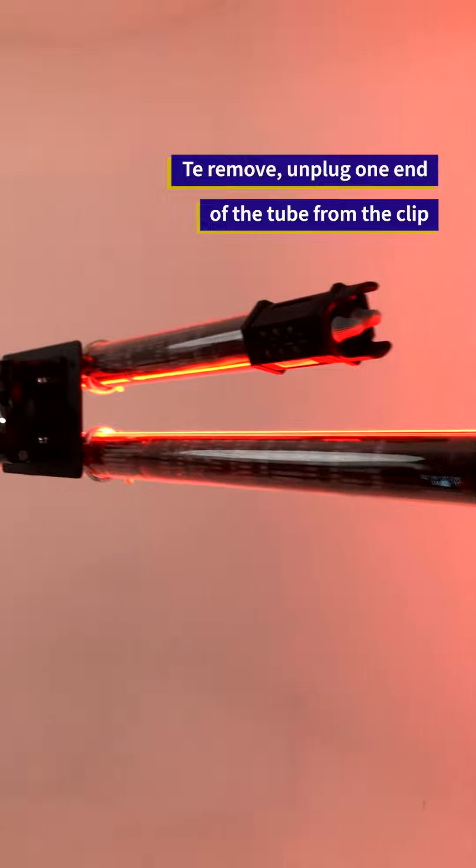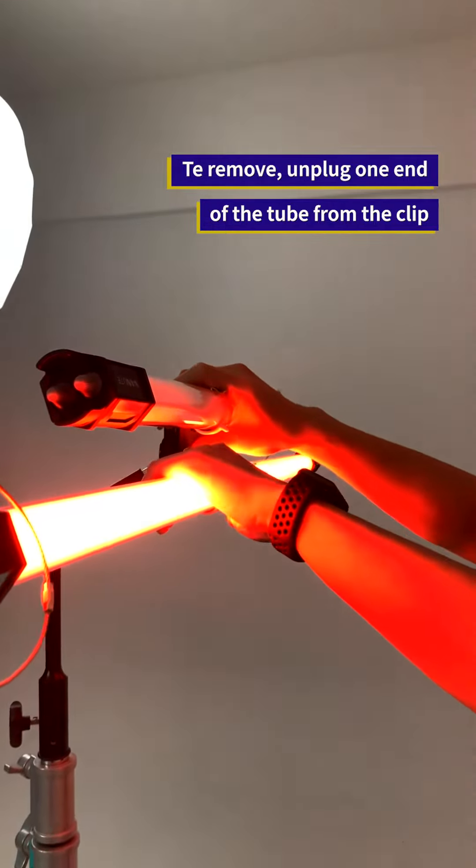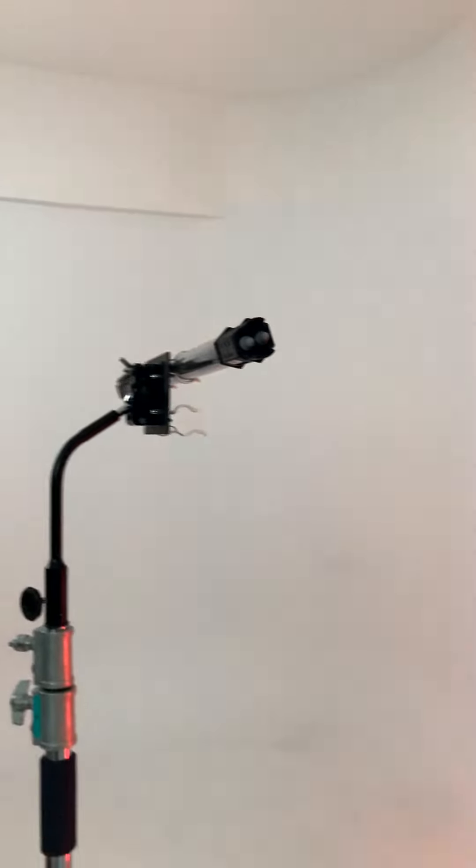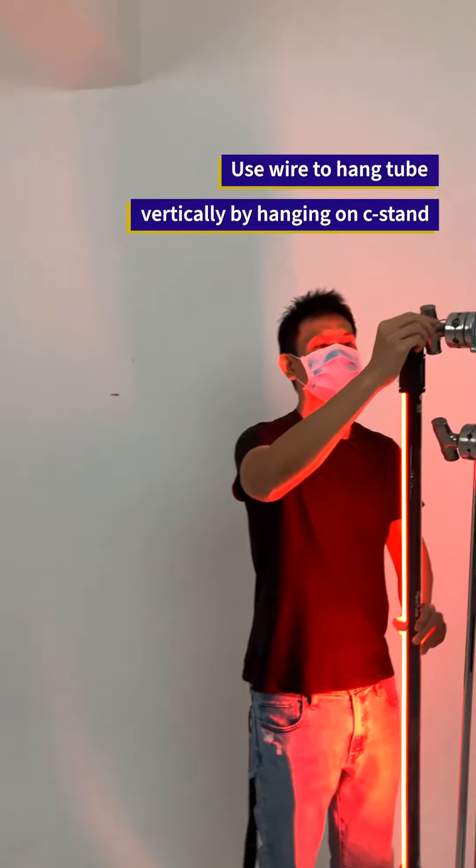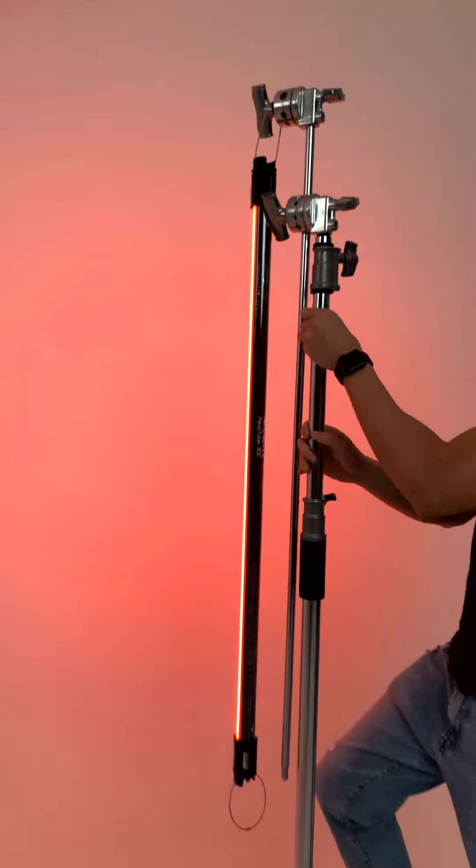The Pavotube can be mounted not just in this way. You can actually take it out. Just need to unplug from one end first and then it'll come off. So I can use the wire mesh over here to hang it onto a stand and then I bring it up.